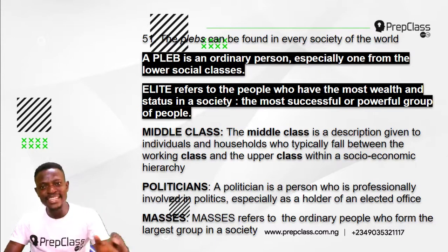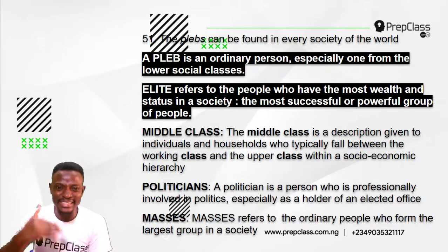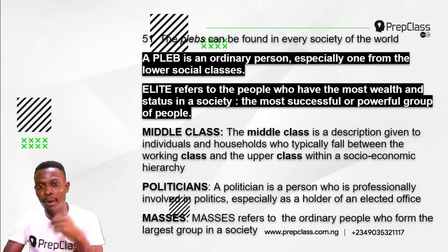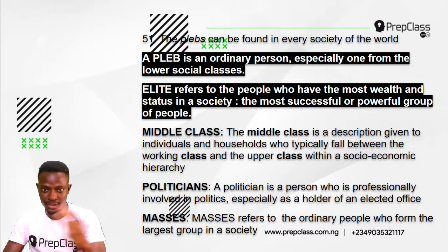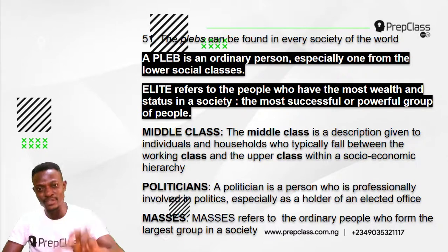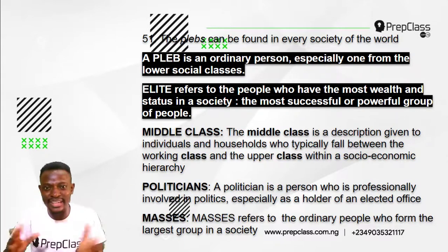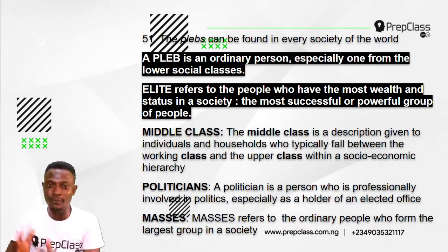The elite refers to the people who have the most wealth and status in a society — the most successful or powerful group of people. The pleb is an ordinary person from the lower social classes, but the elite refers to the most successful or powerful group of people in the society.